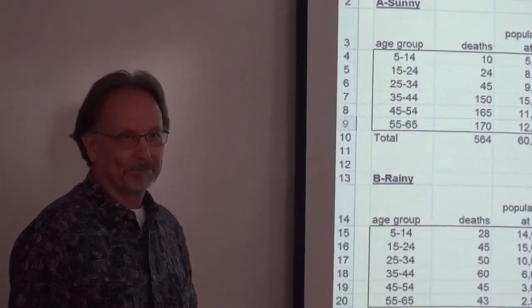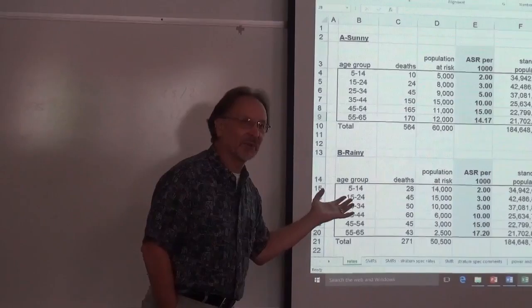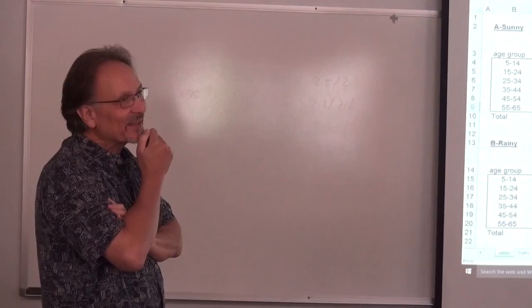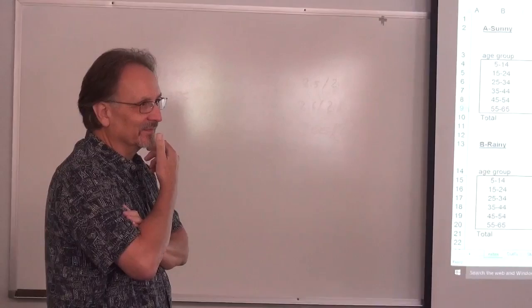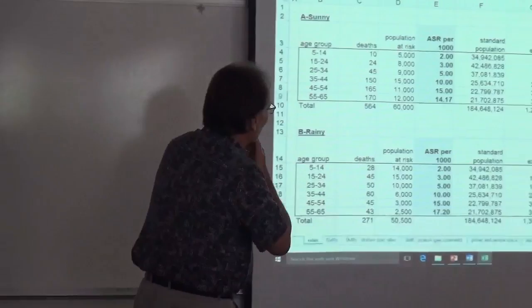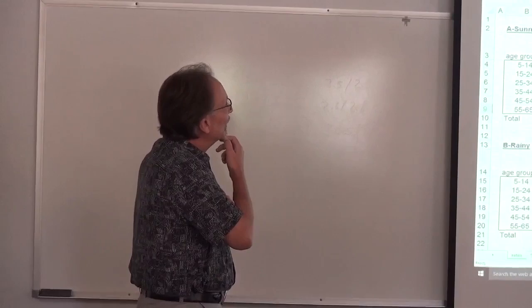Any questions thus far? So crude rate — is that basically a raw rate? Crude is raw, you could think of it that way. Crude is simply looking at the aggregate death rates, whereas age-adjusted takes into account population structure as compared to a standard population.